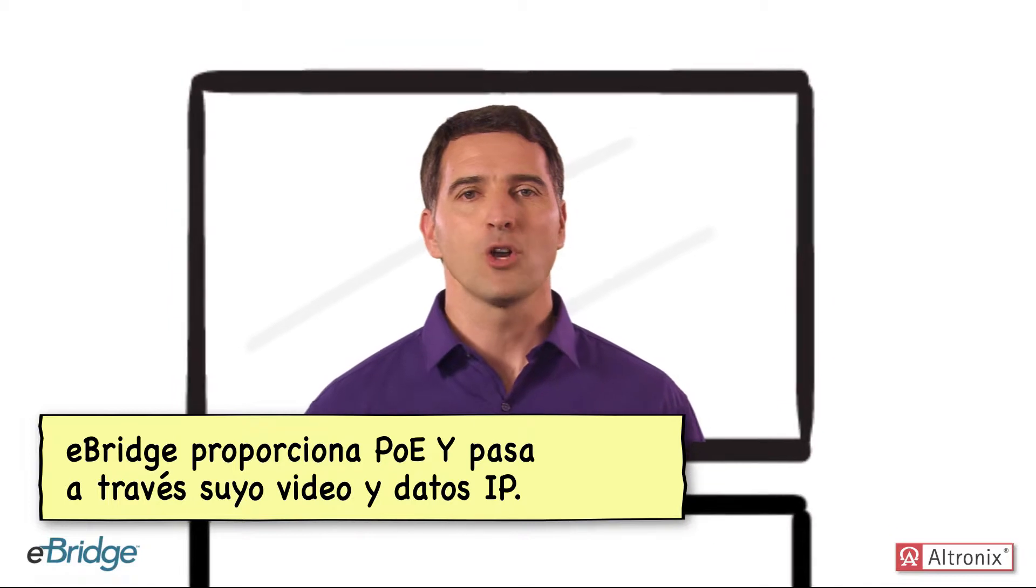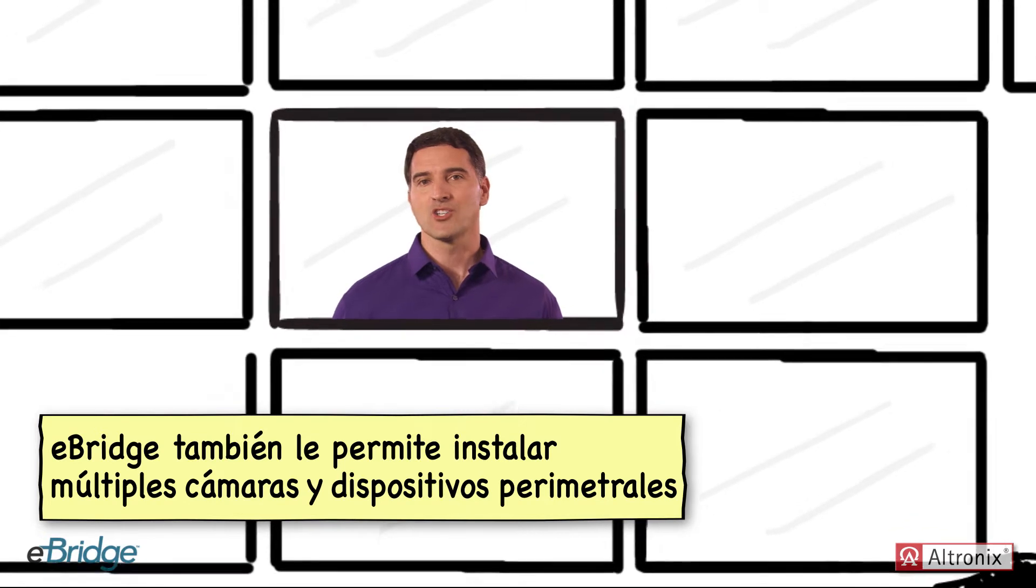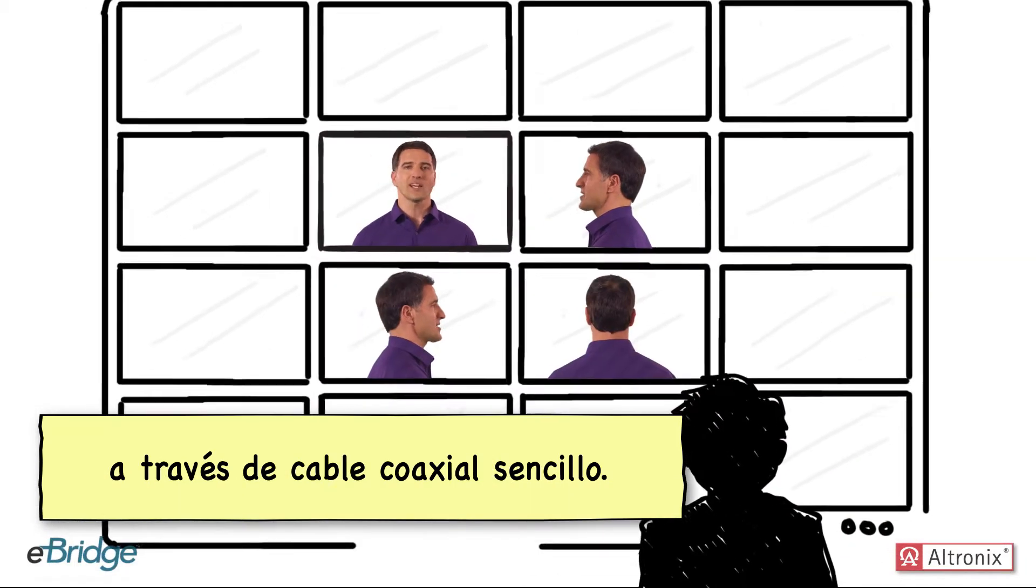eBridge provides power over Ethernet and passes through IP video and data. eBridge also allows you to install multiple cameras and edge devices over a single coax cable.